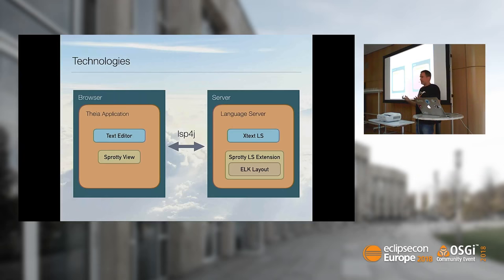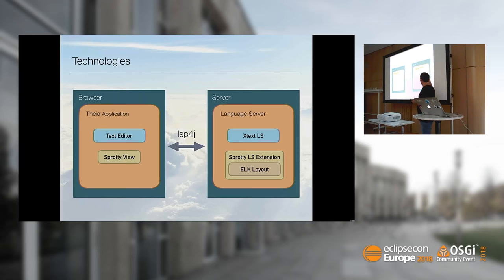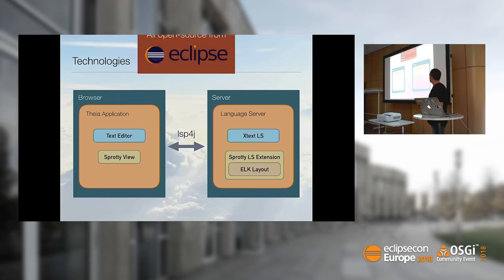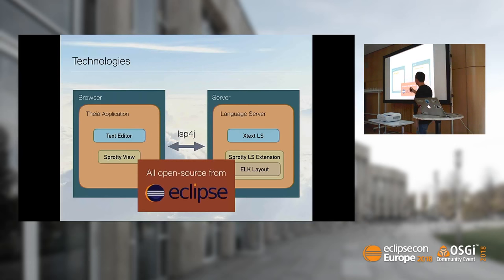Theia provides us with a text editor that can be fed by language services. On the server side, we're going to implement the language with Xtext, create a language server from that, extend it with graphics by means of the Sprotty framework, maybe lay out the entire thing with the Eclipse Layout Kernel. And then on the client, receive all the graphics processed here and render it with Sprotty as well. This is pretty cool because all of that is Eclipse technology — Theia is Eclipse, LSP4J is Eclipse, Xtext is Eclipse, Sprotty is going to Eclipse, ELK is Eclipse. So it's all open source, all free, all Eclipse.